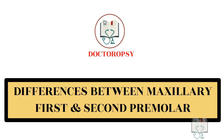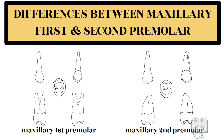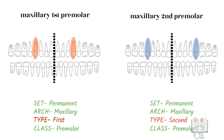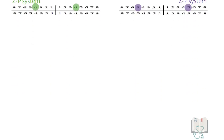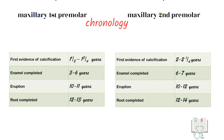Permanent maxillary first and second premolars are very similar, which makes it important to know even the smallest differences between the two teeth. Starting with some general features: the first premolar is the fourth tooth from the midline and the second premolar is the fifth tooth. Chronologically, the first premolar erupts at 10 to 11 years of age and the second premolar at 10 to 12 years.